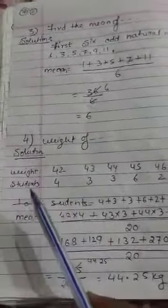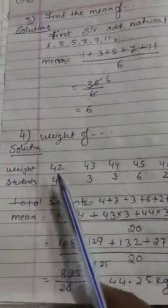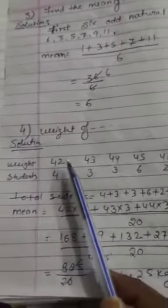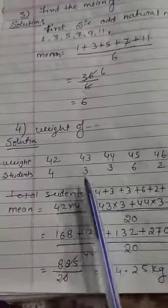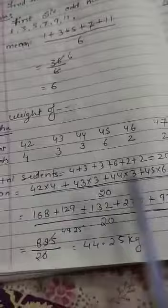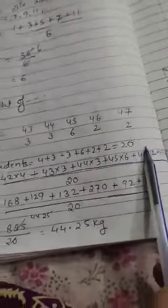First, total number. This weight is 42 kg, 4 students. 43 kg is 3 students. So total number of students is 4 plus 3 plus 3 plus 6 plus 2 plus 2. That is 20.